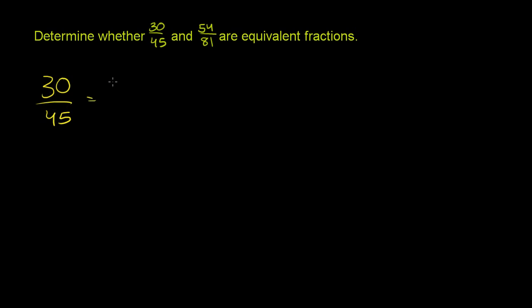So this is the same thing. 30 is 2 times 15, and 45 is 3 times 15. So we can divide both the numerator and the denominator by 15. So if we divide both the numerator and the denominator by 15, what happens?